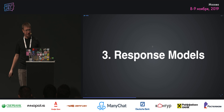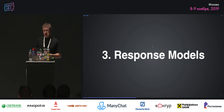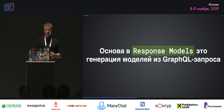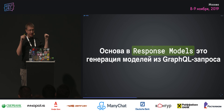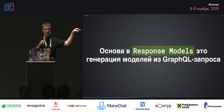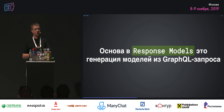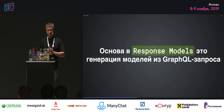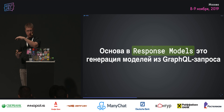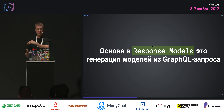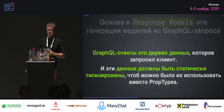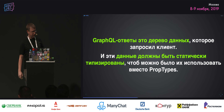Response models — это вещь, когда ваши модели генерируются не с сервера, а то, что конкретно запрашивает клиент в своём GraphQL запросе. То есть что запросили — с того и сгенерировали type definition. Это новое — то, чего не было в REST API.